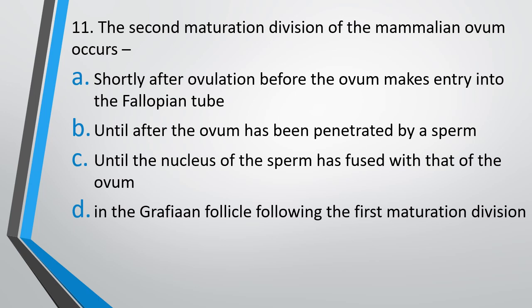Question 11. The second maturation division of the mammalian ovum occurs: shortly after ovulation, before the ovum enters the fallopian tube, until after the ovum has been penetrated by a sperm, or until the nucleus of sperm has fused with that of ovum in the Graafian follicle following the first maturation division? The correct answer is option B — until the ovum has been penetrated by a sperm.